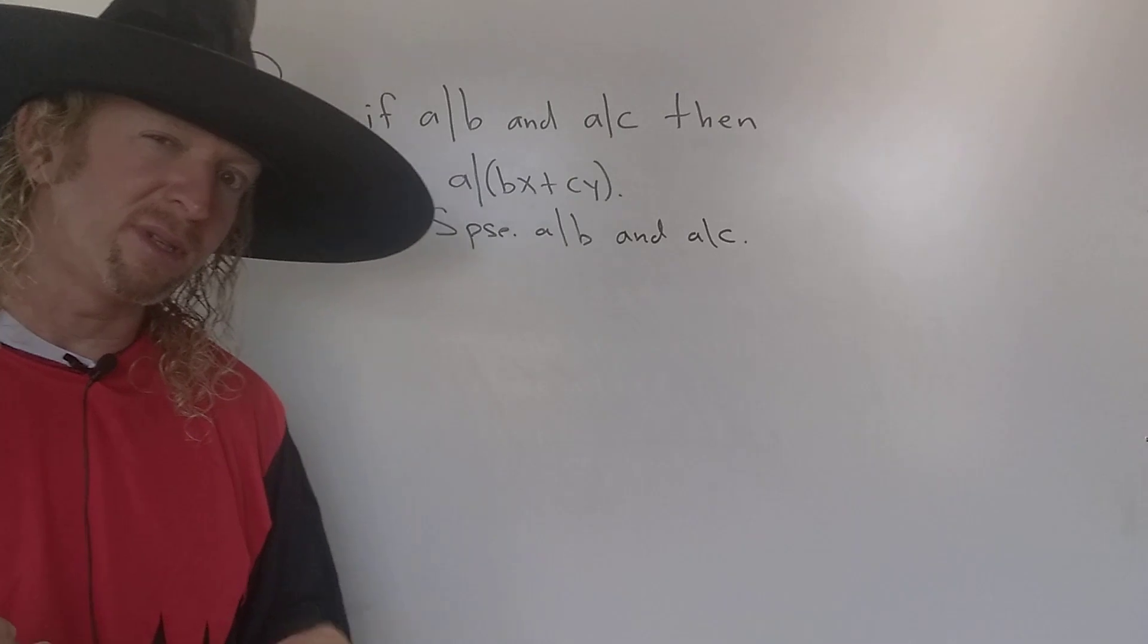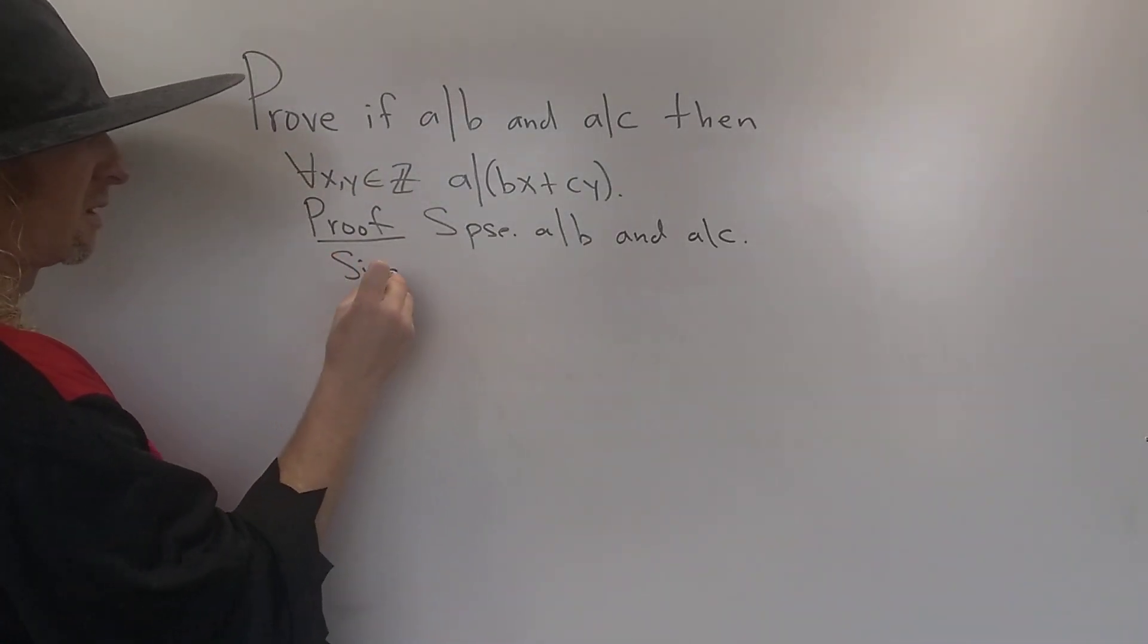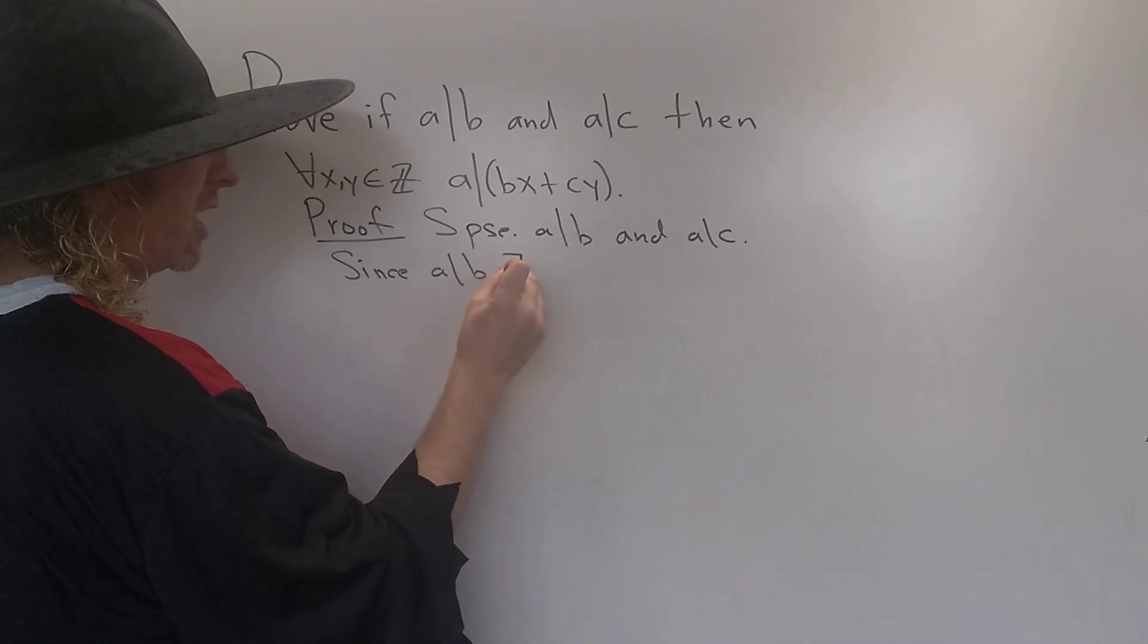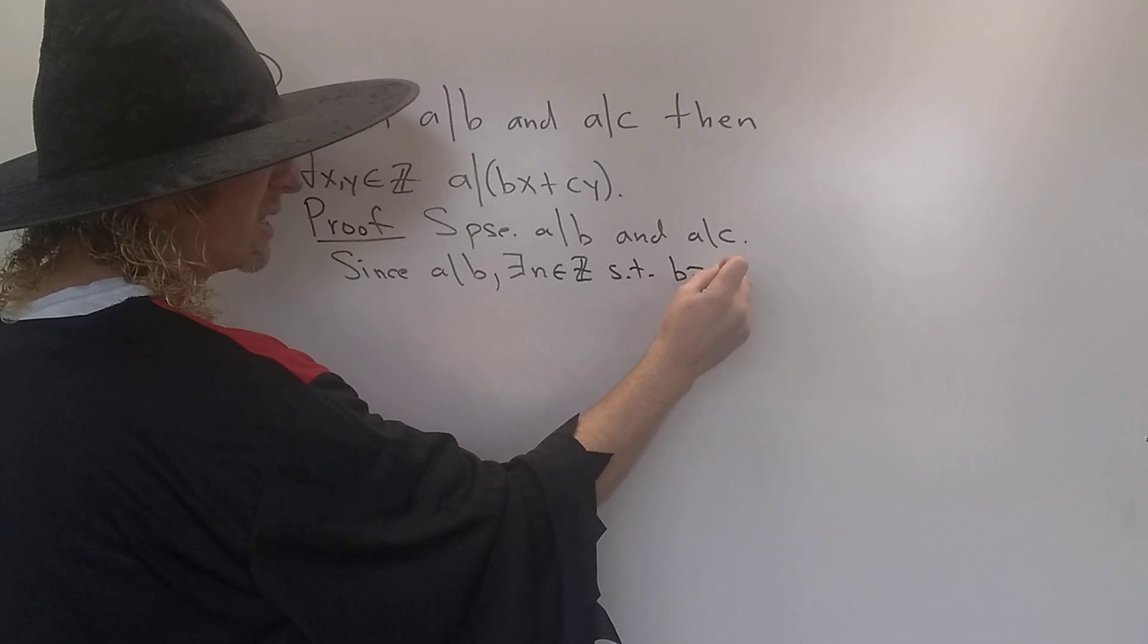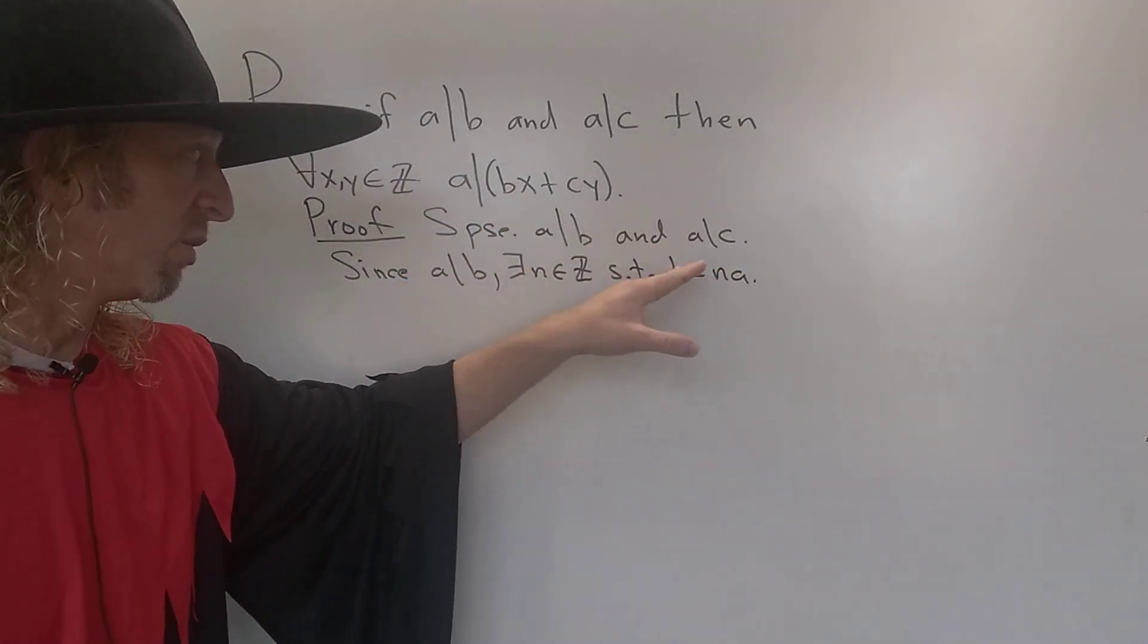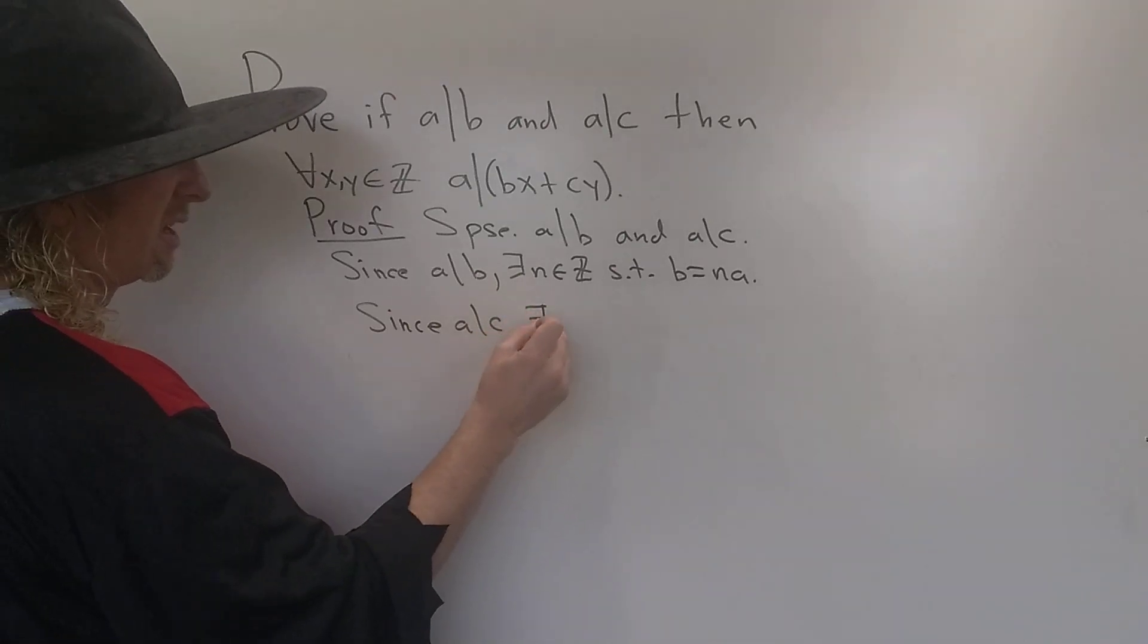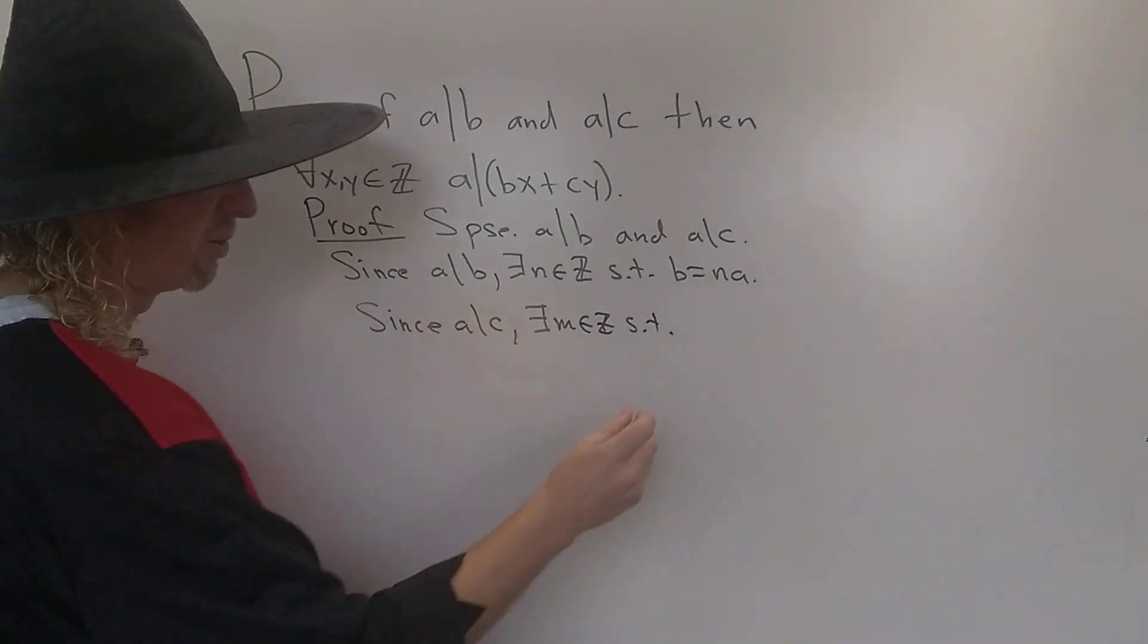The next thing to do is to actually write down what these statements actually mean. So since a divides b, well, what does that mean? That means that b is a multiple of a. So this means there exists an integer n in Z such that b is equal to n times a. So for us to say that a divides b means b is a multiple of a, so you can write it as an integer times a. Likewise, since a divides c, this means there exists an integer m such that c is a multiple of a. So c is equal to ma.